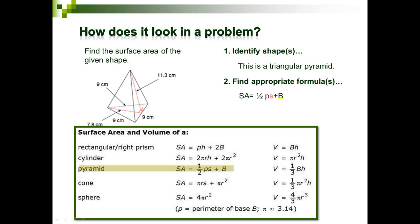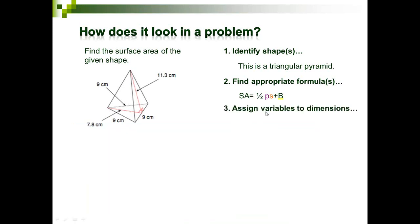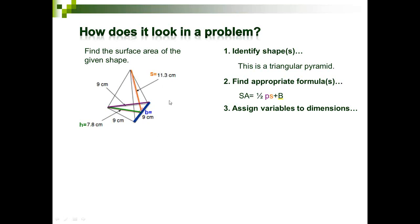My next step is assigning variables to the different dimensions. Looking at this formula, I need: surface area equals one-half perimeter of my base times the slant height plus the area of my base. My triangular base has a base side and a height. The slant height is 11.3. For the perimeter of my triangular base, I have three sides: side one, side two, and side three.